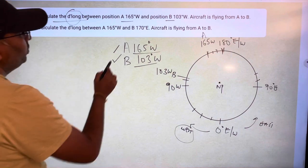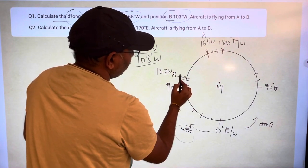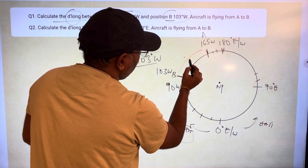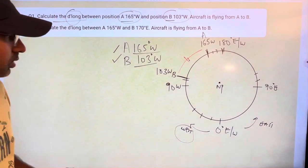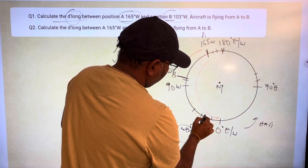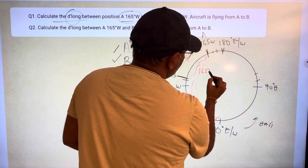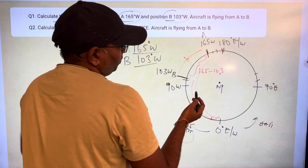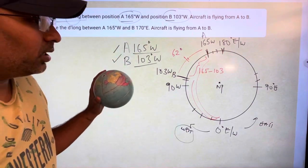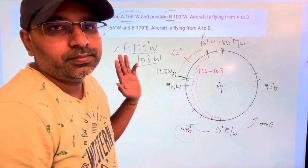The D-long between position A to position B — you are going from position A, which is this, to position B. You are flying your aircraft like this. From here the total is 165, from here it is 103. Now, this D-long would be 165 minus 103, which would be 62 degrees.